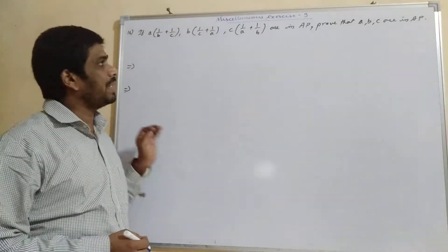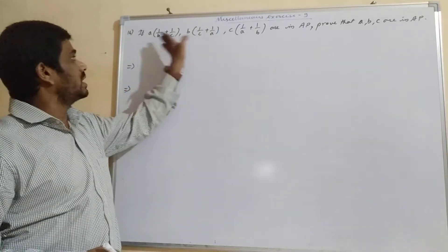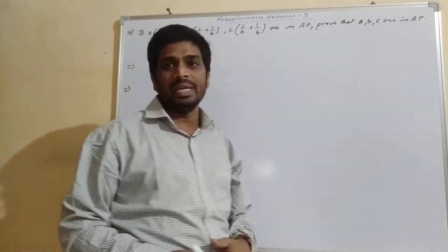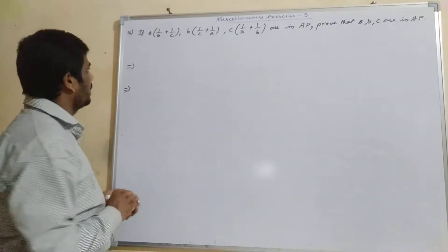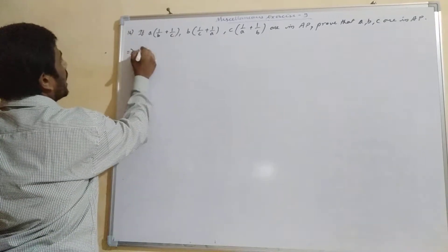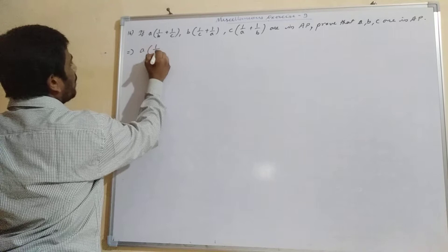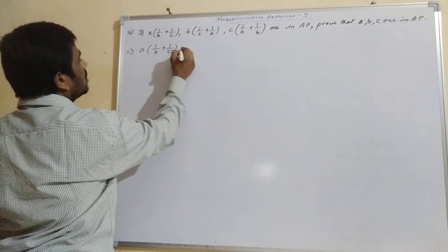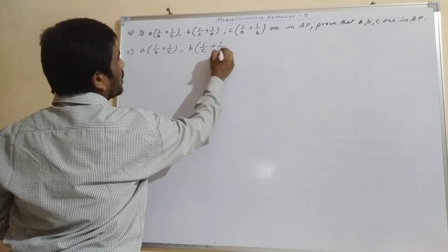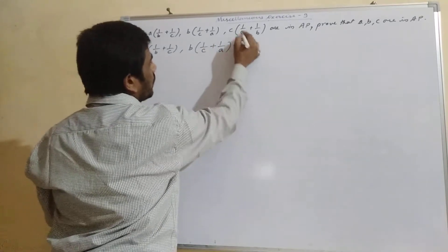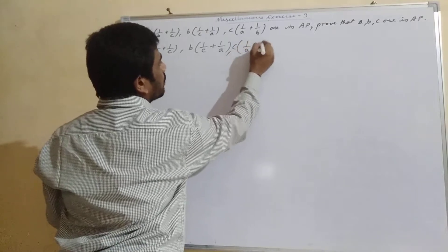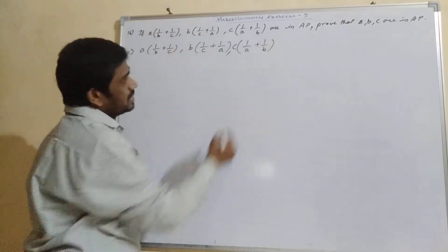This is the 16th question of the same exercise. The given terms are in AP and we have to show that A, B, C are in AP. So let us write what is given in AP: A(1/B + 1/C), B(1/C + 1/A), and C(1/A + 1/B) are in AP.